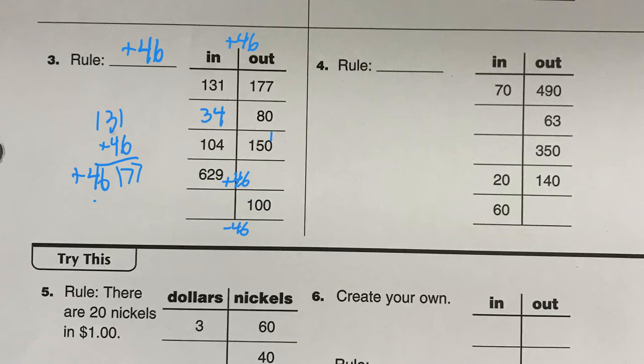Now when we look over here at the next one, we go from 70 to 490, and from 20 to 140. I don't think it's going to be addition, because this one went up by a lot and this one didn't go up by as much. So this is going to be some kind of multiplication.